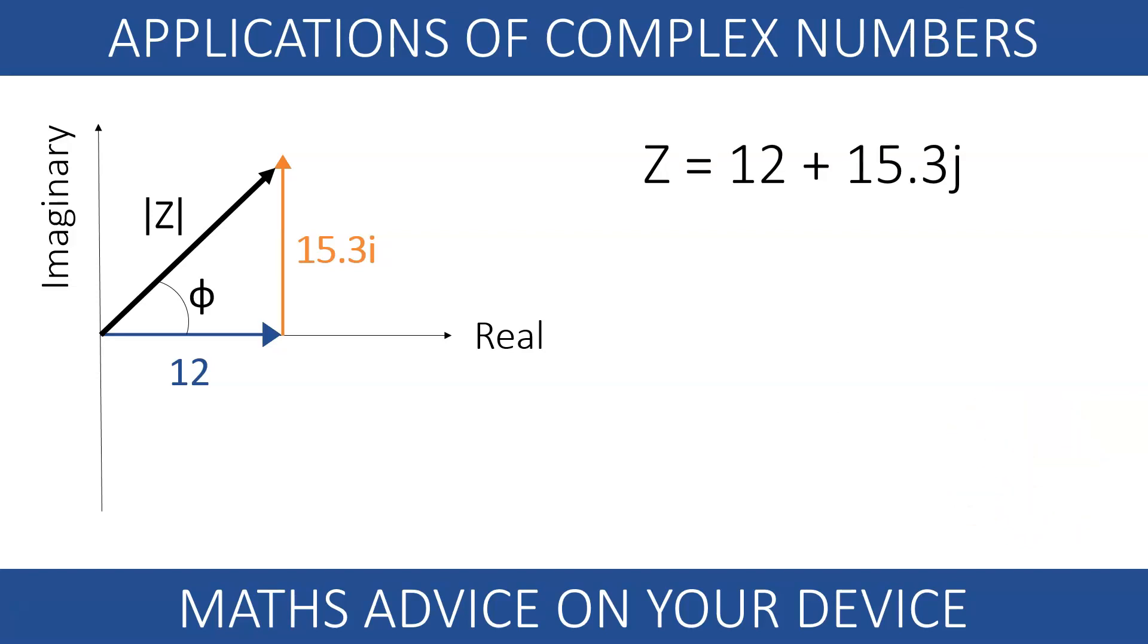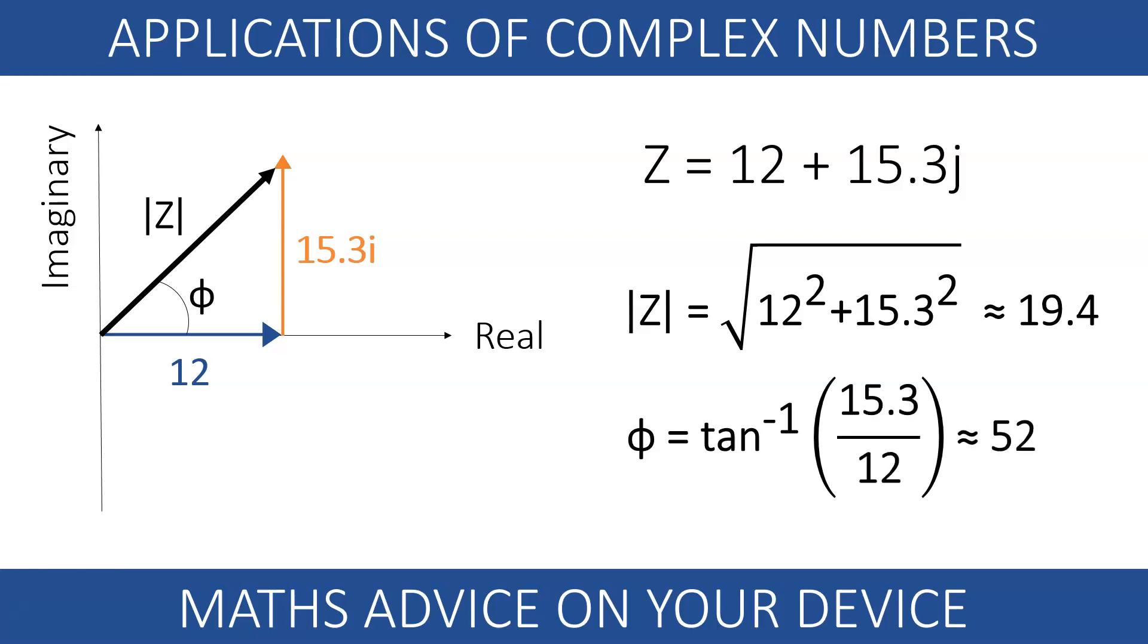Right, the modulus of this complex number can be found using Pythagoras. Taking the square roots of the sum of the squares, the modulus is approximately 19.4. The argument can be found using trigonometry. Since the imaginary component is the opposite side and the real component is the adjacent, we need to use inverse tangent to figure out the angle.